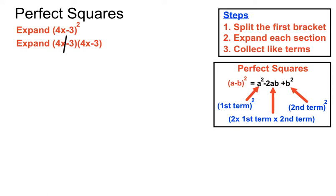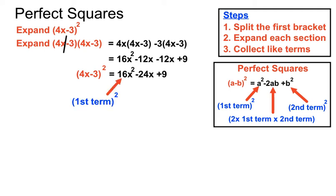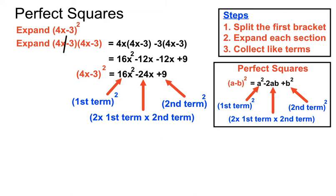Here's another example. Splitting the front term and expanding gives 16x squared minus 12x minus another 12x plus 9. Collecting the like terms in the middle, we end up with 16x squared minus 24x plus 9. That once again follows the pattern: first term squared, minus two lots of the first term times the second term, plus the second term squared.